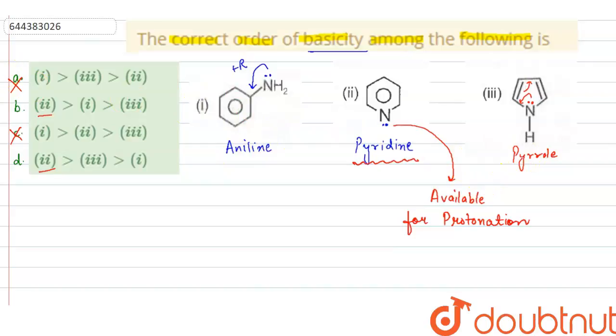Now, then now we will compare the basicity of aniline and pyrrole. Now, as you can see in aniline, the ring is already aromatic, but in pyrrole, the ring is aromatic because of this lone pair of nitrogen. So aniline still can donate its lone pair, it can do protonation but here if this nitrogen donate its lone pair, then the aromaticity of the ring will be lost.